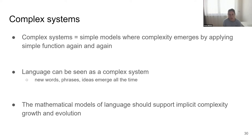I believe language can be seen as a complex system, and having a mathematical version of complex systems could be a very good model for describing language. This is not what artificial neural networks do today — even a nice recurrent language model will just degrade in performance if you try to retrain it on text it's generating. You can't have a language model that starts writing more and more complex books — that kind of increasing complexity over time is not possible with current models.